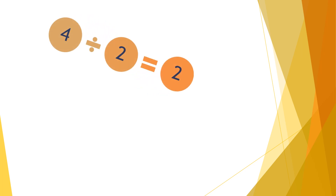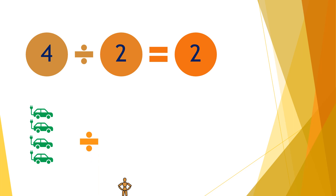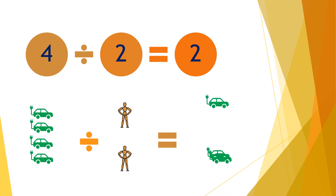Moving on to the next question: four divided by two equals two. So if you have four cars and divide them by two people, each person will receive two cars.